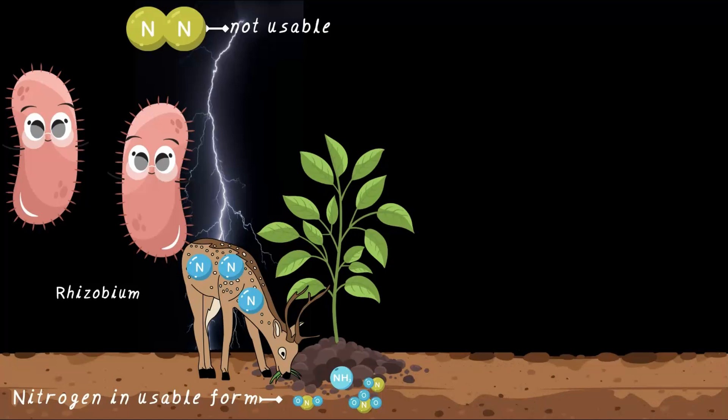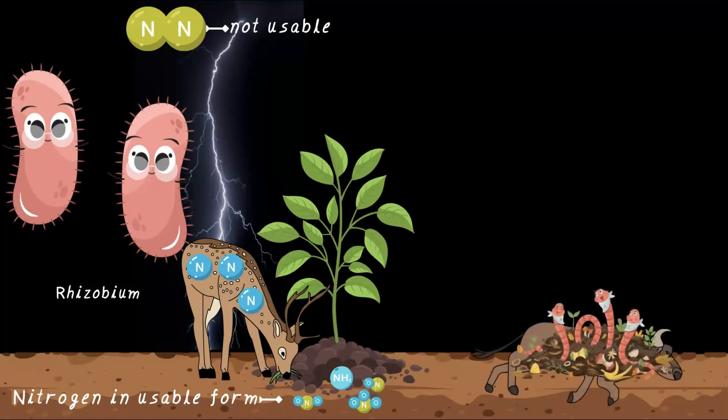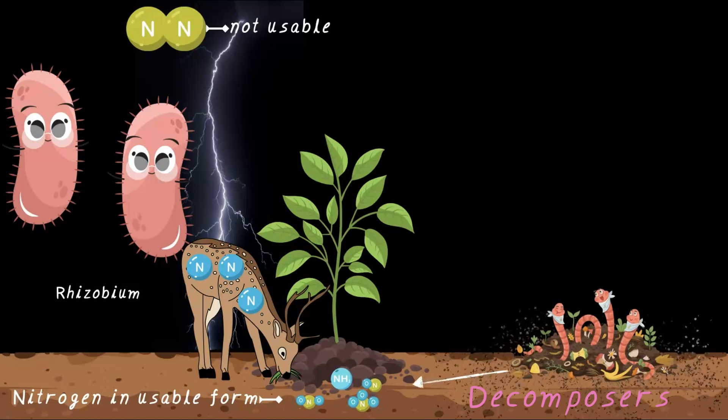Nitrogen plays a very important role in the life processes of these animals. What happens when these animals die? That's where another set of bacteria comes in, called decomposers. These microorganisms break down the dead animals and waste, releasing nitrogen compounds back into the soil.